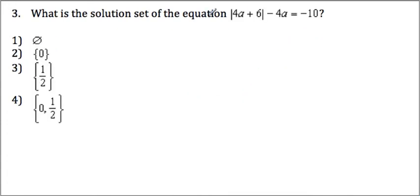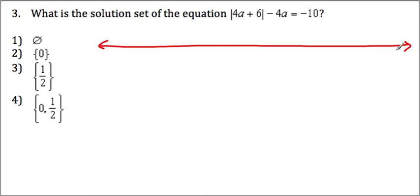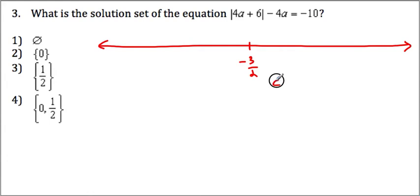What is the solution set? From a number line, this portion can equal 0 when a equals negative 3 over 2. When a is greater than negative 3 over 2, this portion is positive, so we can rewrite it as 4a plus 6.